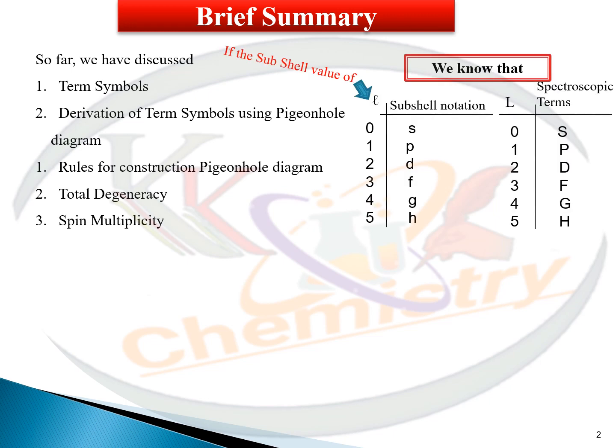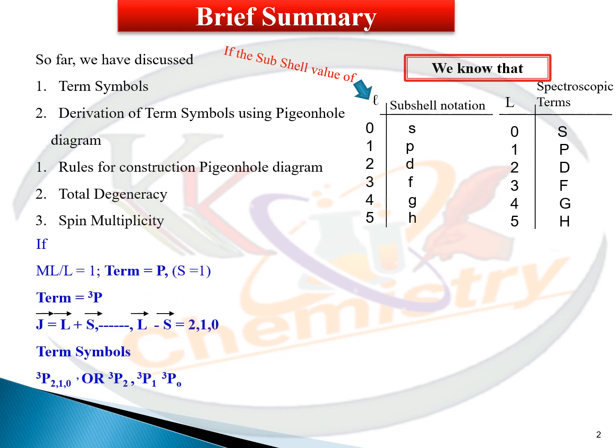You should be aware that the small letter l represents a subshell, whereas the capital letter L represents the spectroscopic term. So when small l is equal to 0, the subshell can be denoted by a small letter. In contrast, if we represent any term with a capital letter, we go towards the capital L. There is a slight difference between small l and capital L.